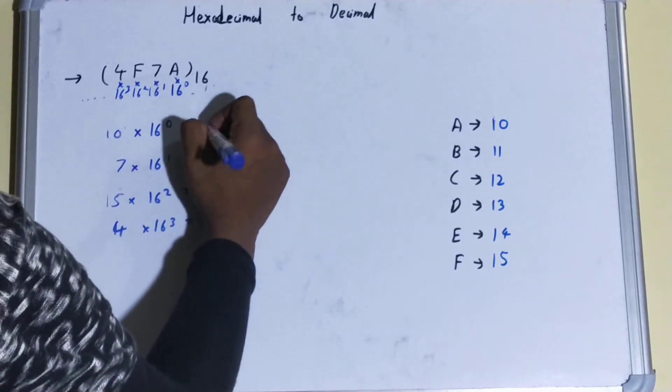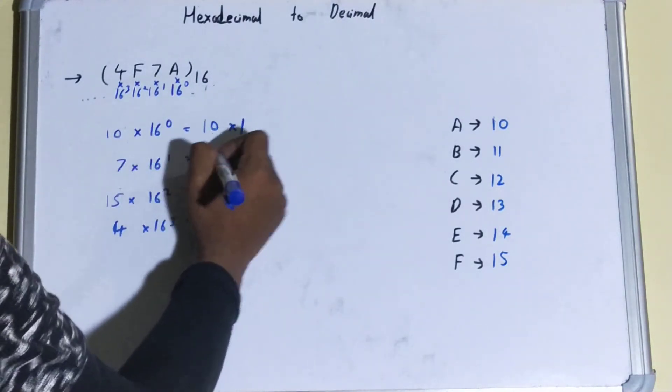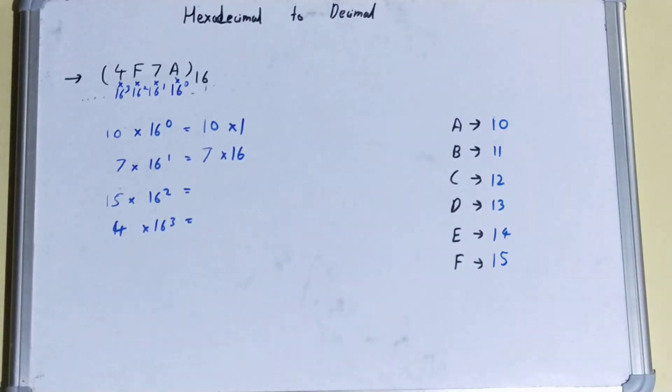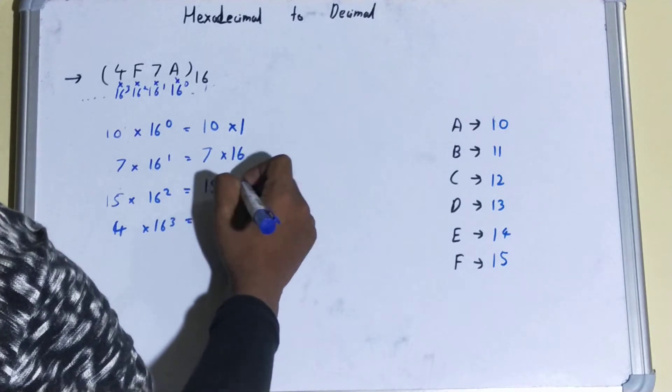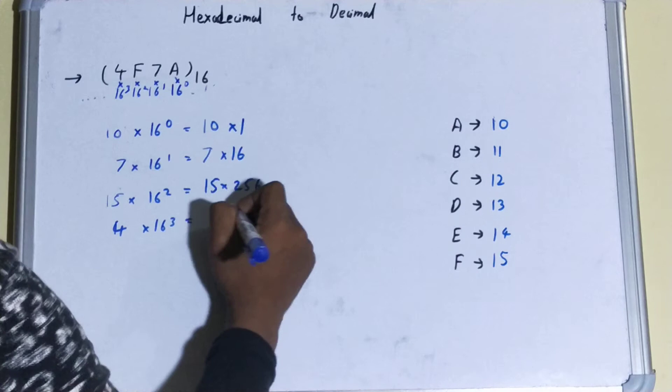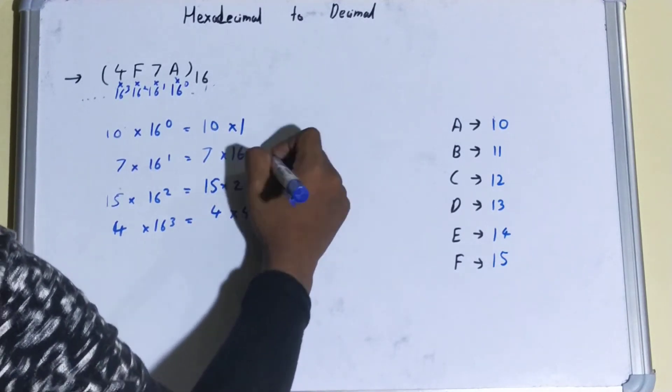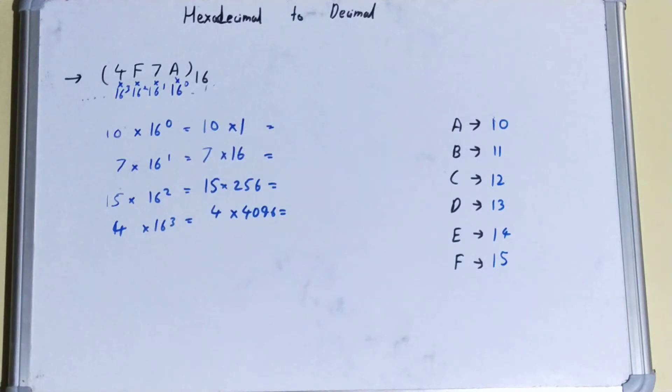So what it actually will be: it will be 10 into 1, then 7 into 16, then 15 into 256, and then 4 into 4096. So you'll be requiring a calculator for this. Without calculator it will take a lot of time.